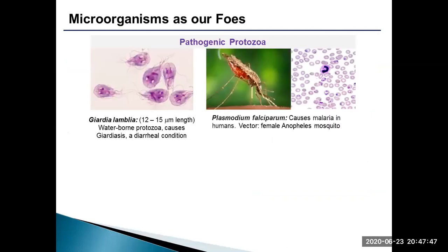Pathogenic protozoa comprise a large number of eukaryotic microorganisms that cause serious parasitic diseases such as malaria, toxoplasmosis, amebiasis, giardiasis and so on. Giardia lamblia causes a diarrheal illness known as giardiasis, which spreads through contaminated food or water or person-to-person contact. Plasmodium falciparum, the unicellular protozoan parasite, causes malaria in humans. The parasite is transmitted through bites of the female Anopheles mosquito. There are about 430 species of Anopheles mosquito, but only 30 to 40 species are actual vectors of malaria.